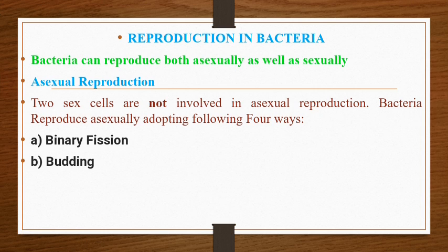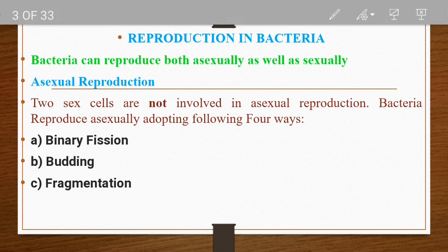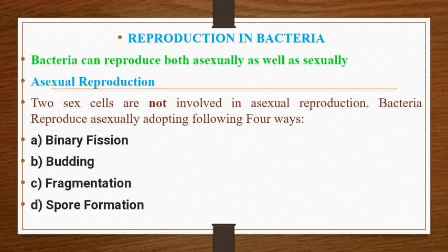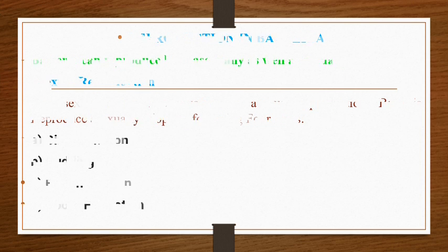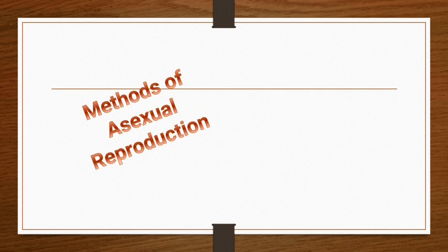The four types of asexual reproduction in bacteria are: first, binary fission; second, budding; third, fragmentation; and fourth, spore formation.